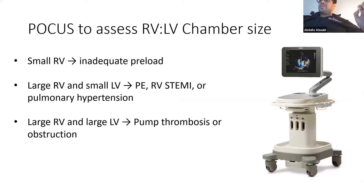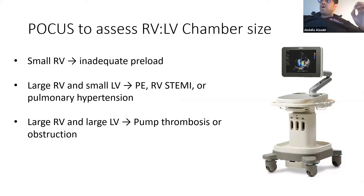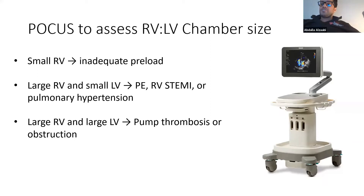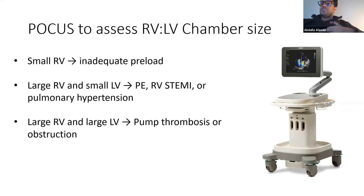Use your FOCUS ultrasound in these patients — not only looking for pleural effusions and B-lines for heart failure, but also to look at right and left chamber size, which can tell you the reason for hypotension. If both left and right ventricles are small, it's most likely a reduction in preload secondary to bleeding or dehydration. If there is a small left ventricle but a large right ventricle, it's most likely secondary to pulmonary hypertension or right ventricular strain. If both ventricles are enlarged, it's more likely secondary to obstruction or pump thrombosis.